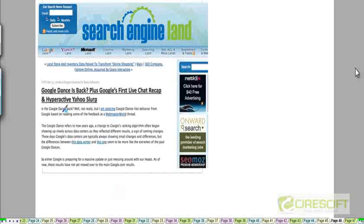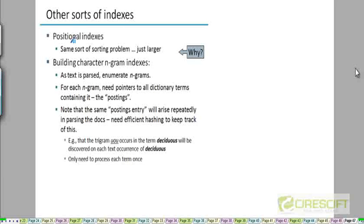You can just read about Google Dance yourself. It's this phenomenon where suddenly Google switches to a new index and the results are kind of different. Think about how to extend what we've discussed in today's lecture to a positional index. We were assuming a non-positional index. With that, I'll end this lecture.